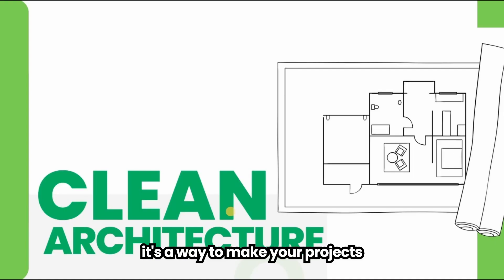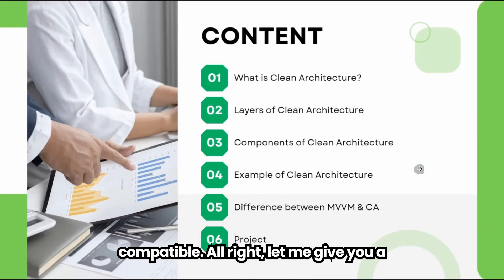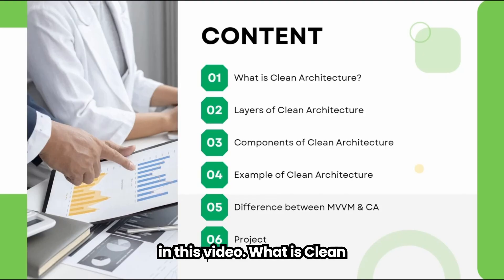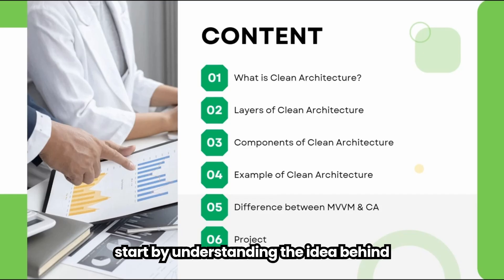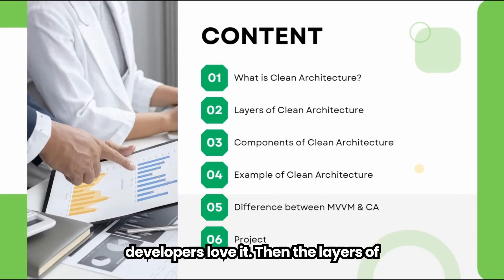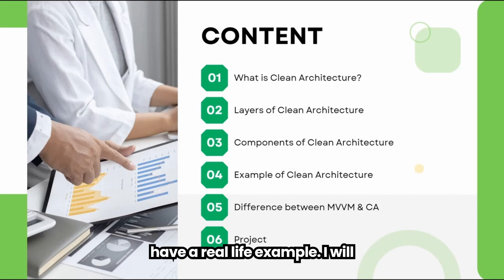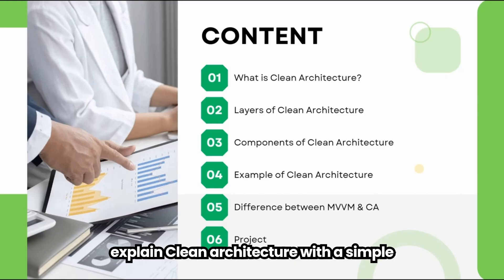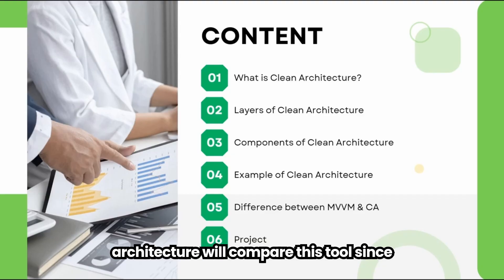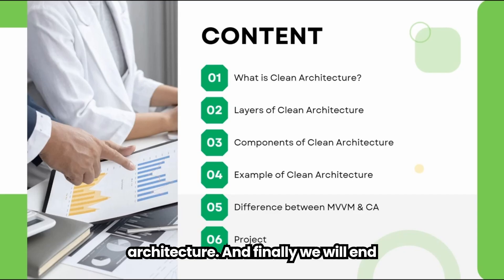Here's a quick roadmap of what we will cover: first, what is clean architecture and why developers love it. Then the three main layers: domain, data, and presentation. Then the core components like entities, use cases, and repositories and how they work together. Then a real-life analogy to make it crystal clear. Then MVVM versus clean architecture, comparing the two since MVVM is very common in Android and often confused with clean architecture. Finally, a small example project in Android Studio.